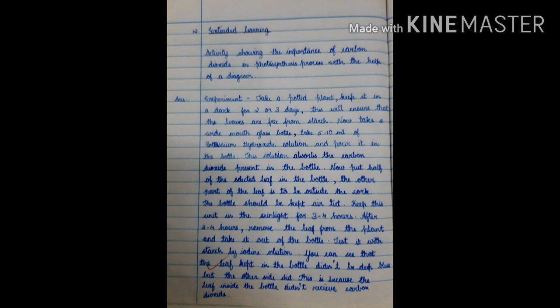Now, take a wide mouth glass bottle. Take 5-10 ml of potassium hydroxide solution and pour it in the bottle. This solution absorbs the carbon dioxide present in the bottle. Now, put half of the selected leaf in the bottle. The other part of the leaf is to be outside the cork. The bottle should be kept air tight.